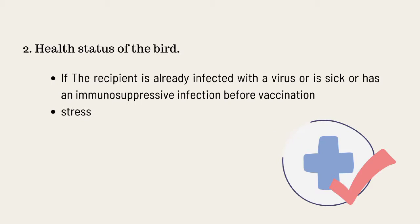Second, Health Status of Birds. If the recipient is already infected with a virus, or is sick, or has an immunosuppressive infection before vaccination, this can cause vaccination failure. Immunosuppression is caused by a compromised immune response and results in increased risk of infectious disease in flocked birds, such as mycotoxicosis, infectious bursal disease (Gumboro), infectious anemia, Marek's disease, and others.